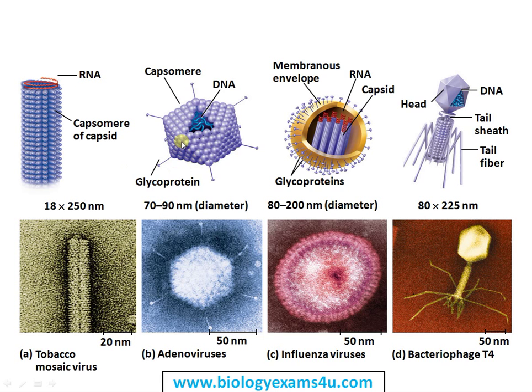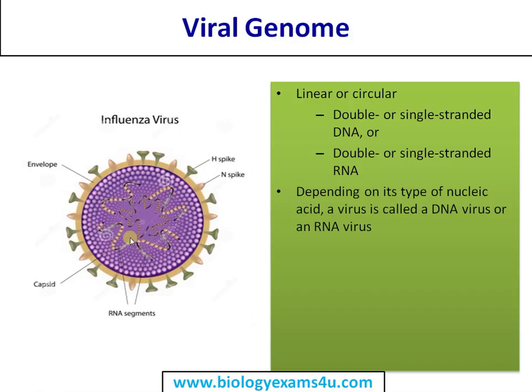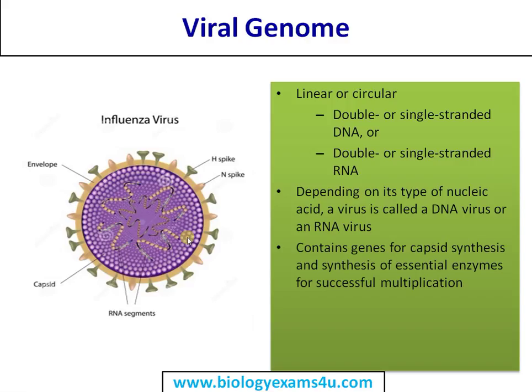The viral genome can be double- or single-stranded DNA or RNA, and it may be linear or circular. Depending on the type of nucleic acid, a virus can be called a DNA virus or an RNA virus. It contains genes for capsid synthesis — very few genes that are essential for successful multiplication inside the host. The genome size is very small, ranging from 2 kilobases in circovirus up to 1.2 megabases in mimivirus, one of the largest viruses.